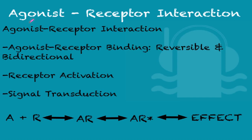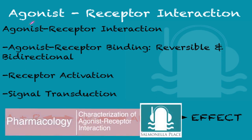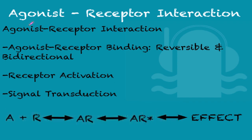Hi everyone, this is Alex from Salmonella Place and today's pharmacology lecture is going to be on the characterization of agonist-receptor interaction. We're going to be speaking about occupation, affinity, the dose-response curve, potency, and efficacy.